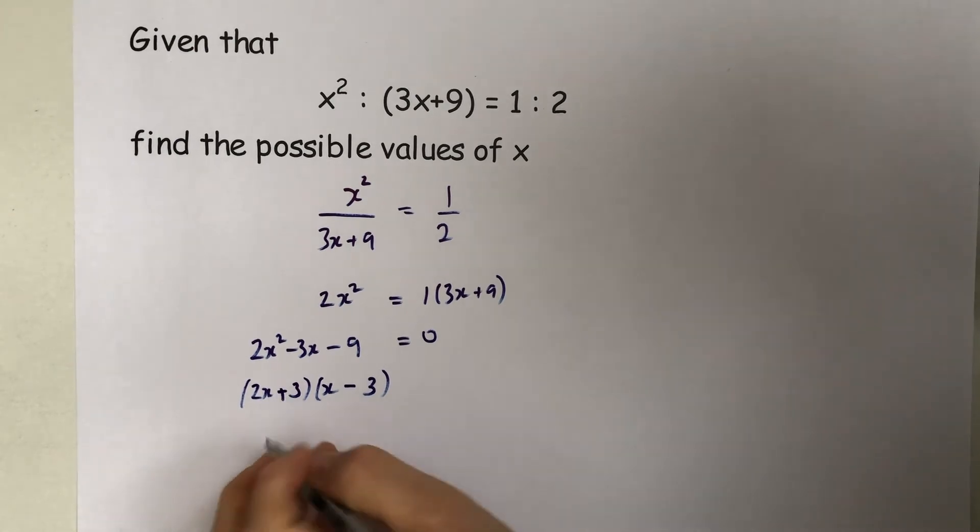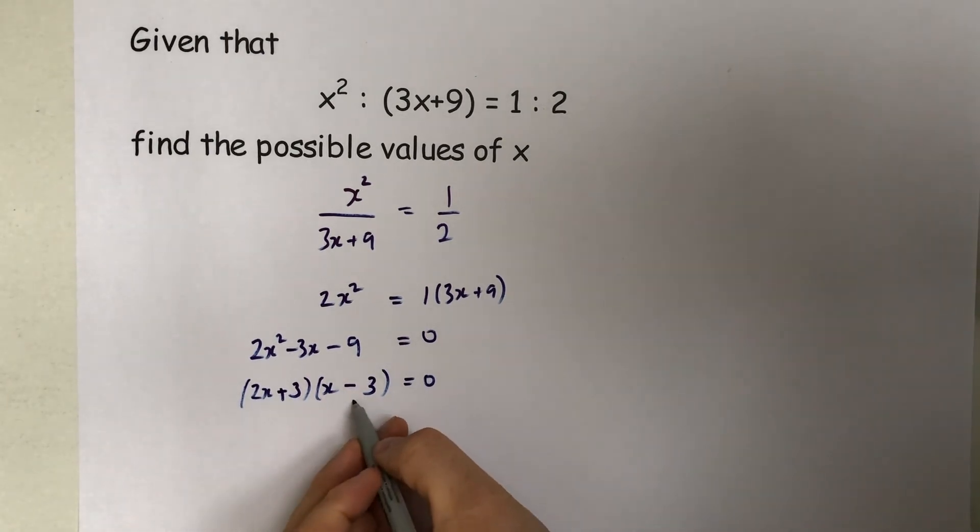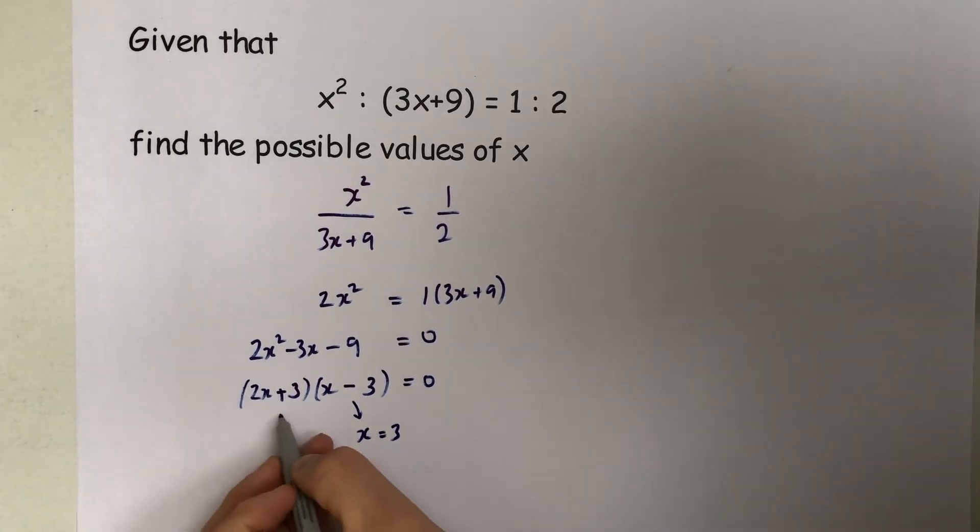...minus in that 3x, or plus, that would produce the minus 3x in the middle. Therefore x can be equal to 3, or x can be equal to minus 3 divided by 2. Two answers.